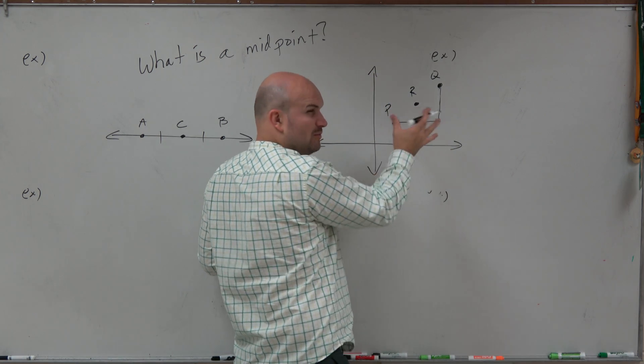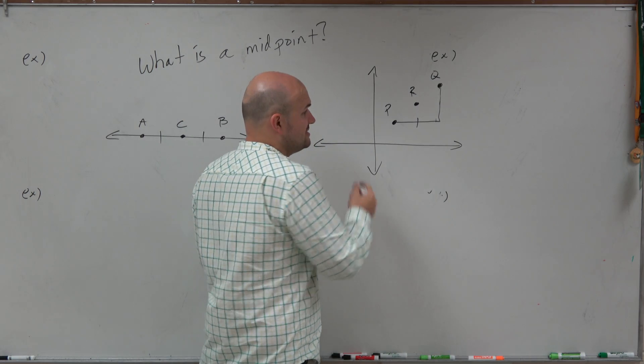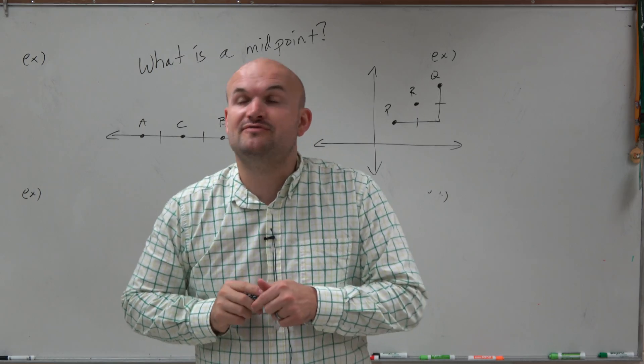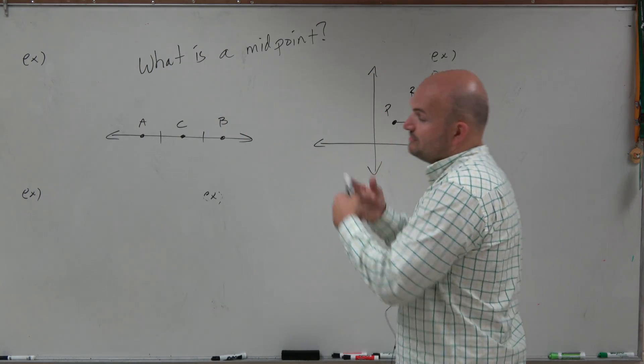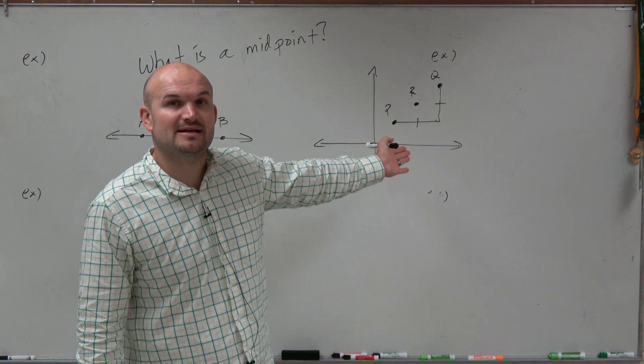And if you look at this point R, which looks like it's right in the middle between P and Q, you notice that R is the midpoint horizontally and the midpoint vertically. And that understanding is going to be very helpful when we look to find the midpoint of two points on a number line, as well as the midpoint of two points in space. Thanks.